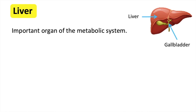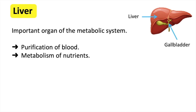The liver has many functions. The first is to purify blood it receives from around the body. The nutrients received in the blood are processed by the liver and broken down. These include fats, carbohydrates, vitamins, minerals, etc. The liver ensures a good and constant level of nutrients are in the body.